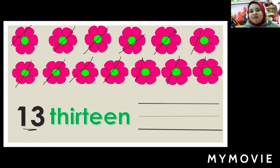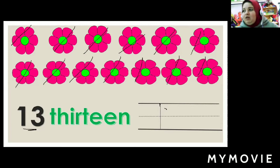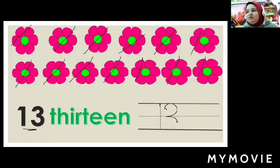And how do we write number thirteen? Very, very easy. Start from the dot, straight line down. And start from the dot, go up round, touch the line, semicircle, don't take off your pencil, and another semicircle. Easy? Okay.